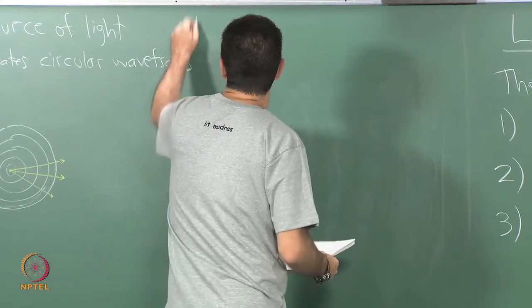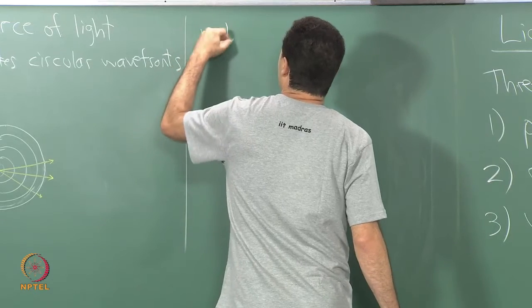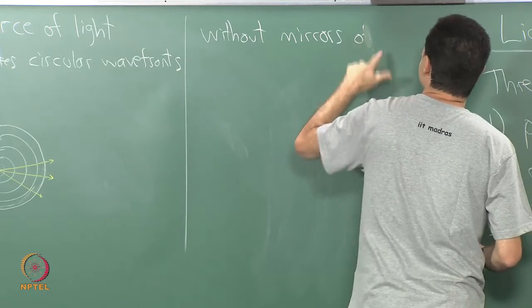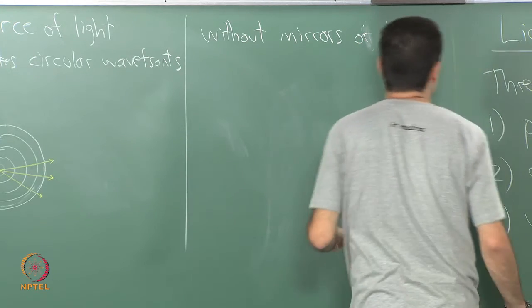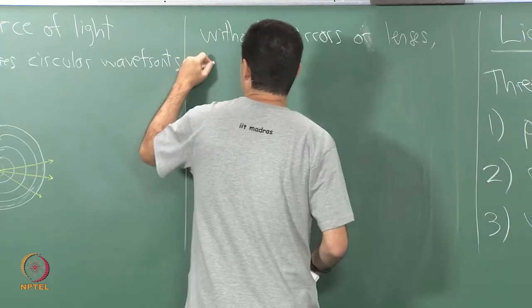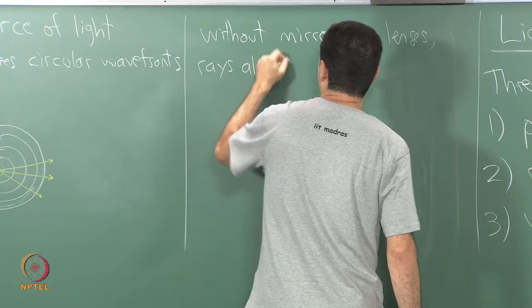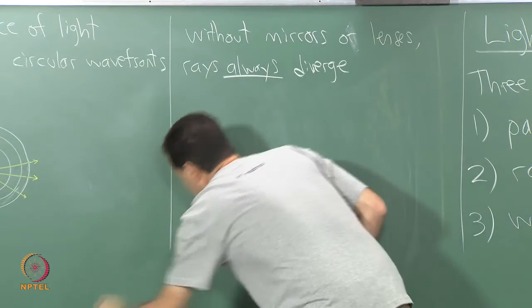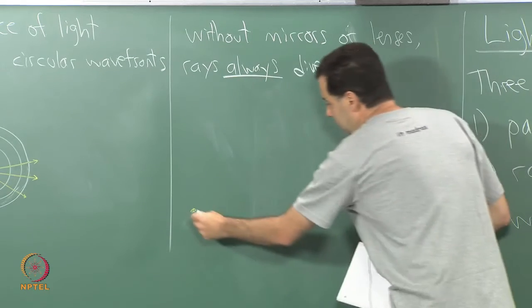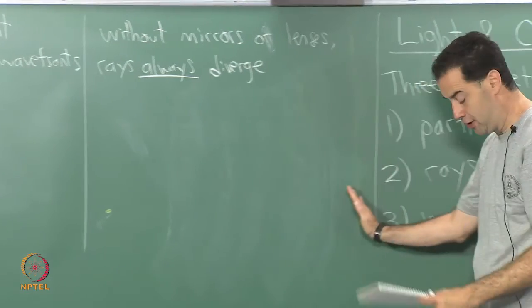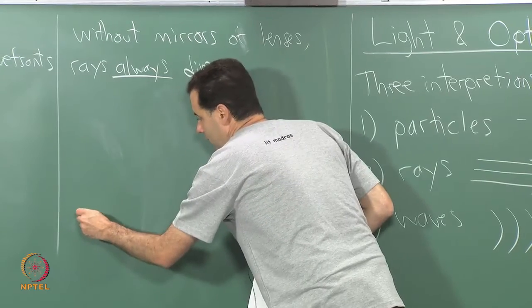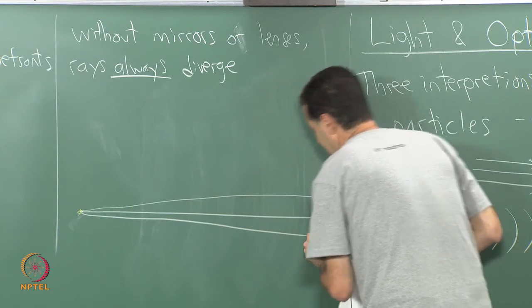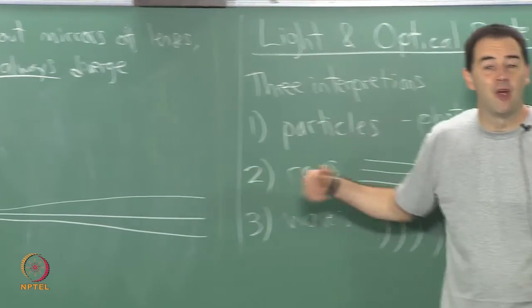One interesting thing about the physical world is that without mirrors or lenses, rays always diverge. We could get very far away from the light source and the wave fronts are propagating outward. No matter how far away we go, they're still diverging.